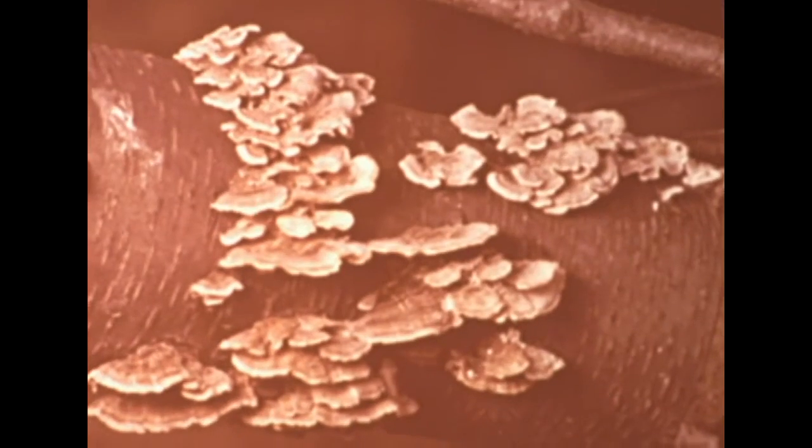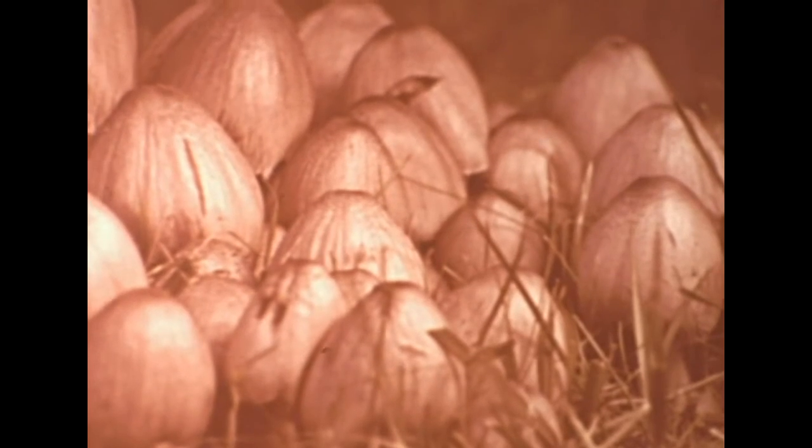Fungi consist of vegetative and reproductive structures. Here we see the vegetative mycelium of a typical wood-destroying fungus creeping over the moist surface of a piece of oak wood. The action is here accelerated about 20,000 times by time-lapse photography. Reproductive structures of wood decaying fungi vary greatly in size, form, and color. Included among them are the polypores or pore fungi, the toothed fungi, the leather fungi, and many of the gill fungi, commonly called mushrooms.